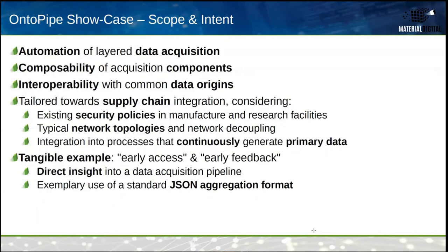When you start integrating things into reality, you encounter policies. Sometimes it's confidential information, sometimes data privacy — typically called information security. These solutions typically create network topologies that are decoupled, so one piece in your manufacturer hall cannot talk to the cloud directly. Chains and policies emerge as barriers that solutions fueling ontologies must account for.